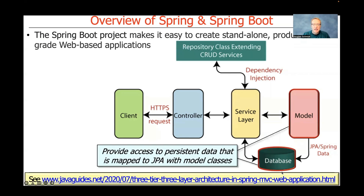There's also typically a model layer, which provides access to persistent data. There are many different ways this gets done — you can use the Java Persistence Architecture, the JPA, and there are other approaches that go above and beyond what JPA does. Basically, they're ways of accessing persistent data with an object-oriented, functional, or reactive interface that your services use to interact with the data.